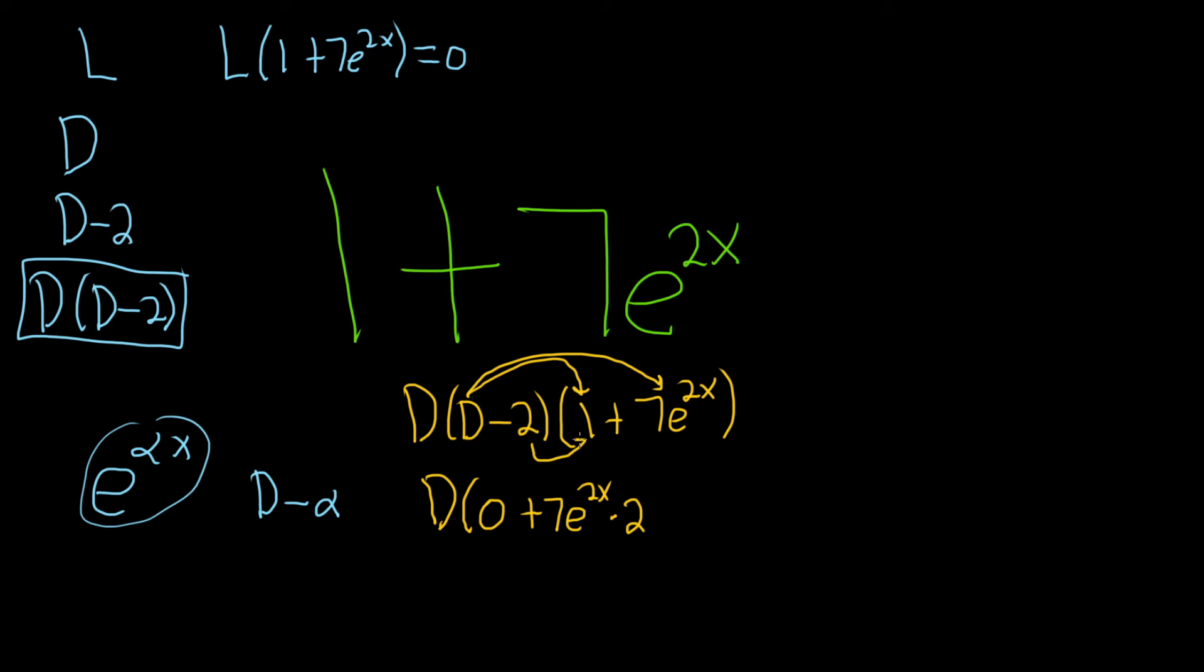Then we apply the negative 2, distribute the negative 2 rather. So negative 2 times 7 is negative 14, and then we have our e to the 2x.